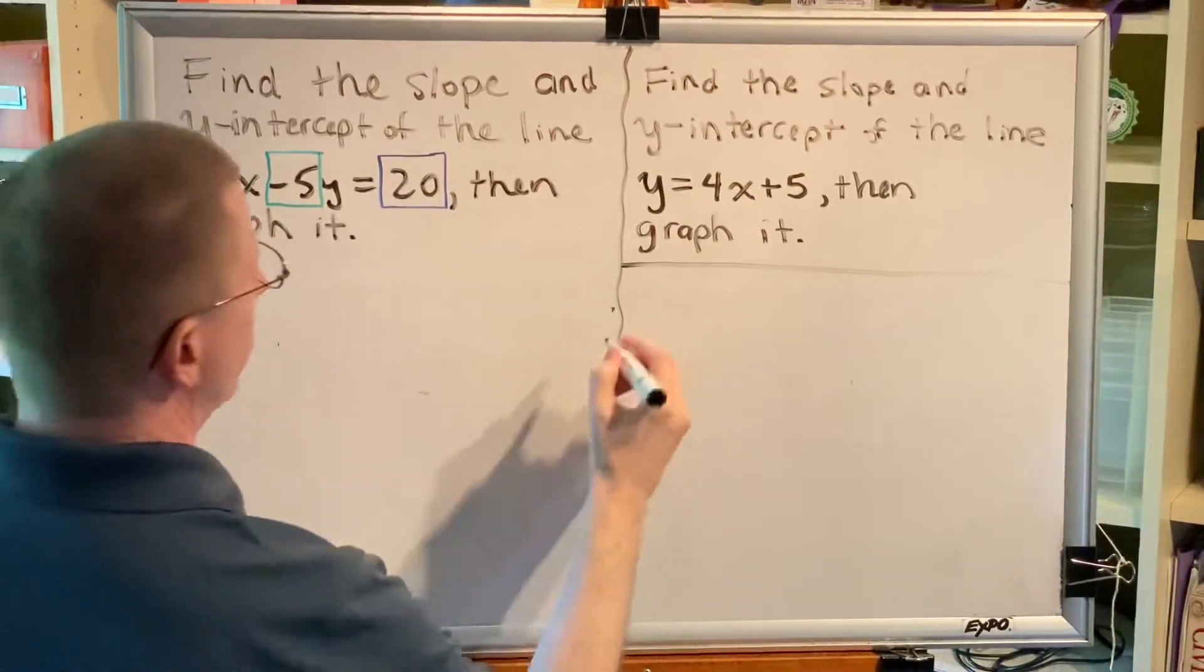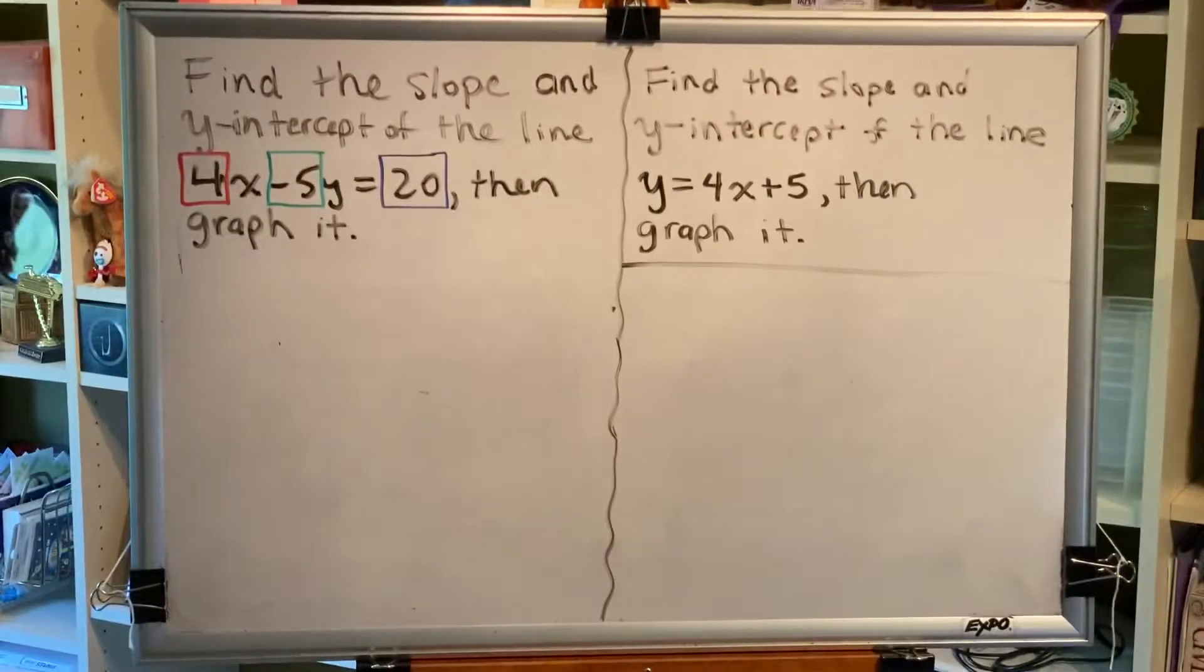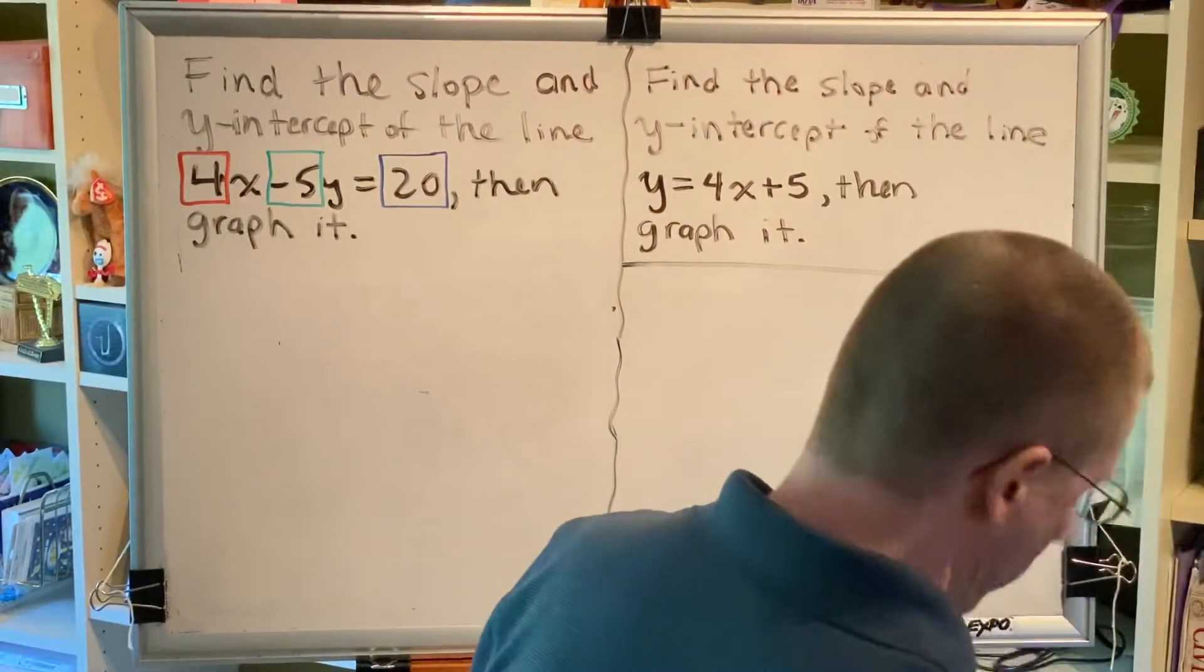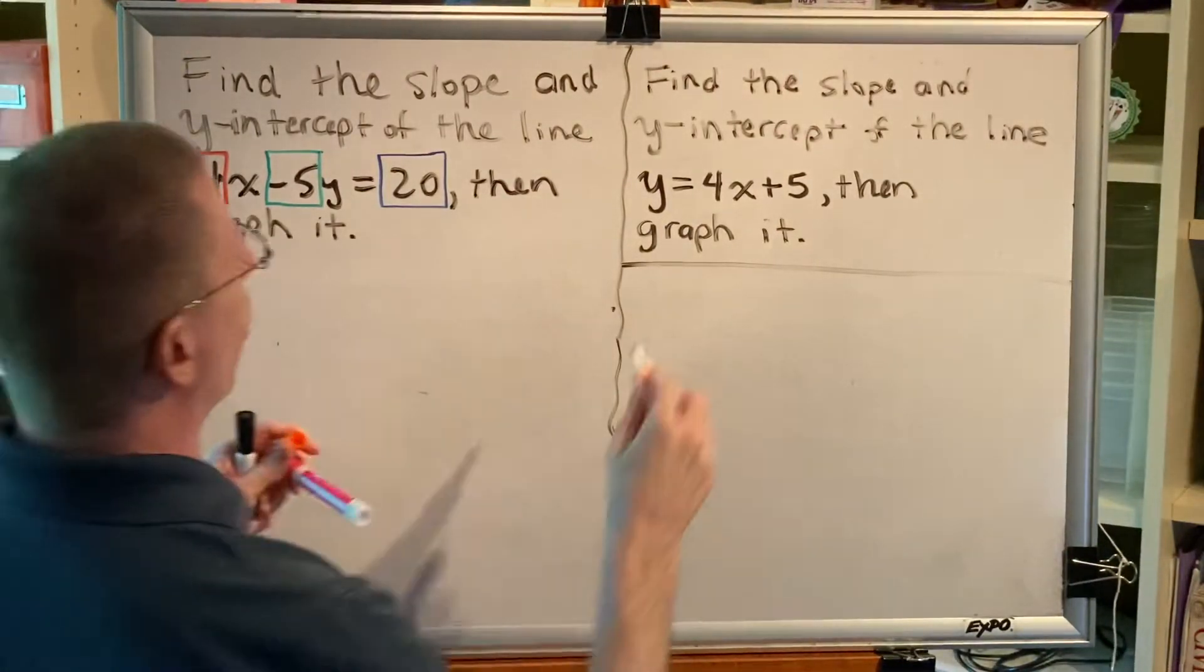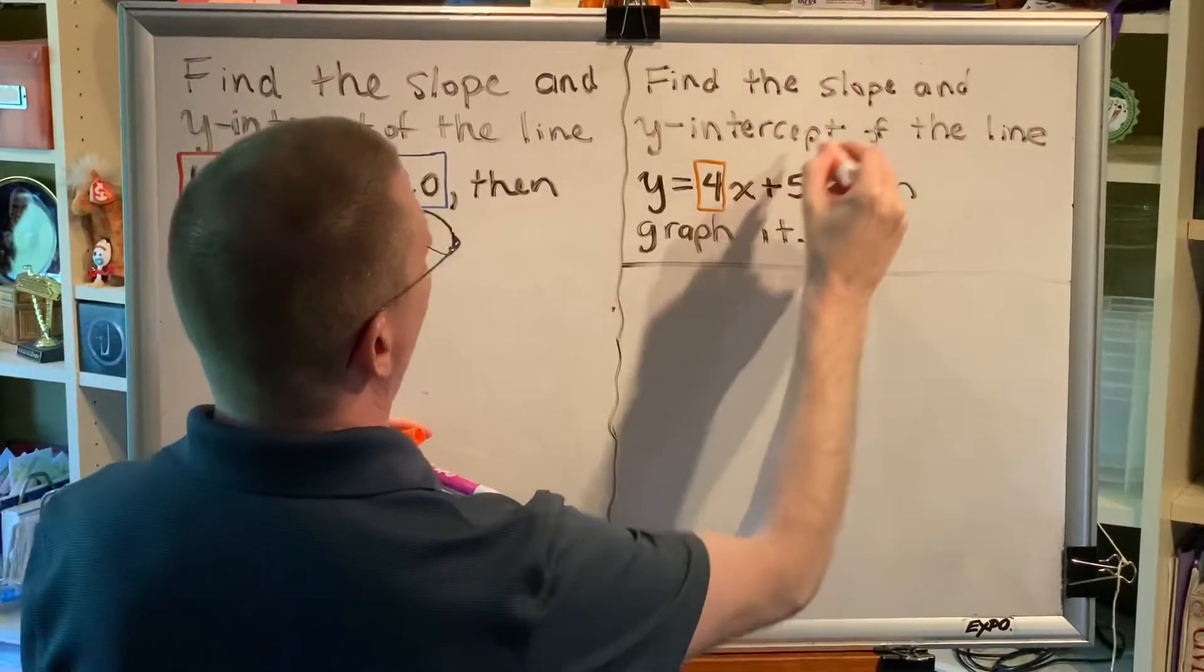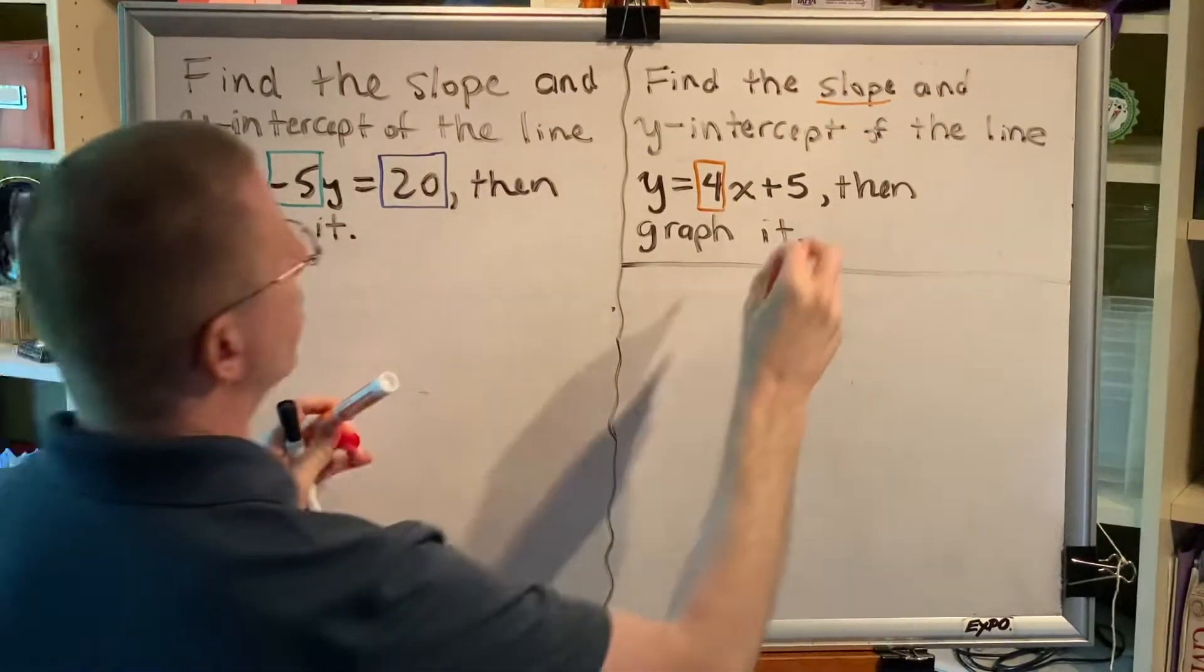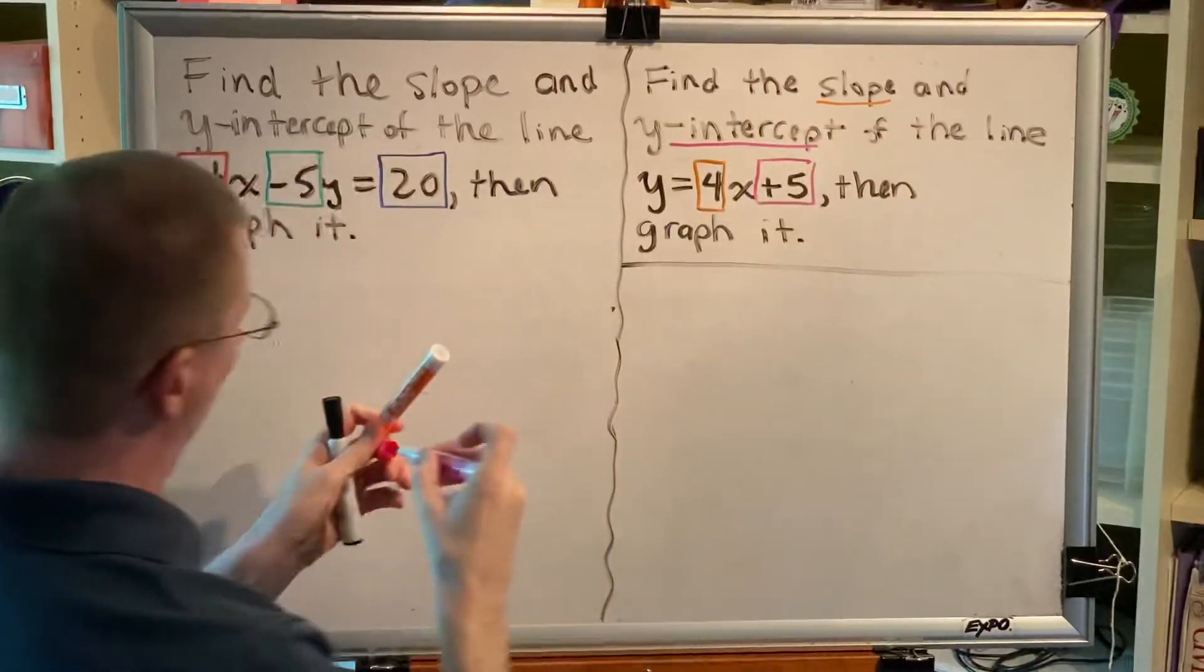All right, this problem says, find the slope and y-intercept of the line, then graph it. Well, this is actually going to be a much easier and shorter problem. And the reason why is because the equation given to us is already in slope-intercept form. So, 4, that's the slope, and positive 5 is the y-coordinate of the y-intercept.